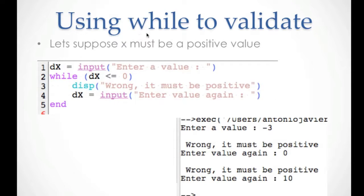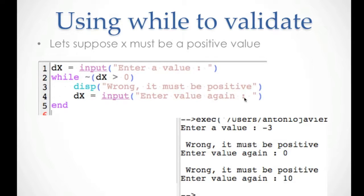Sometimes we use a while loop to validate input. Suppose we have X and want to get a positive value for it. We read a value into X, and while X is smaller than or equal to zero, that is wrong. We display a wrong message and then get the value again. It's very important to get the value again inside the loop so we can eventually exit. We repeat until the user enters the correct value.